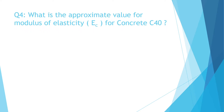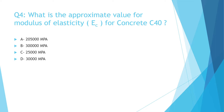Question 4: What is the approximate value for Modulus of Elasticity EC for Concrete C40? A. 205,000 MPa, B. 300,000 MPa, C. 25,000 MPa, D. 30,000 MPa. The correct answer is D: 30,000 MPa.